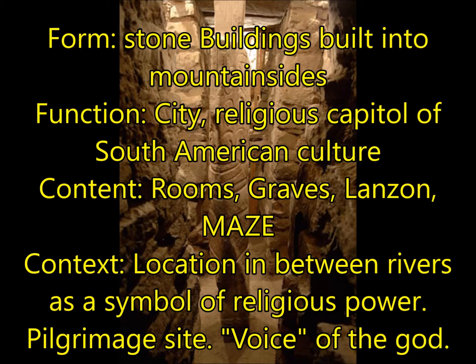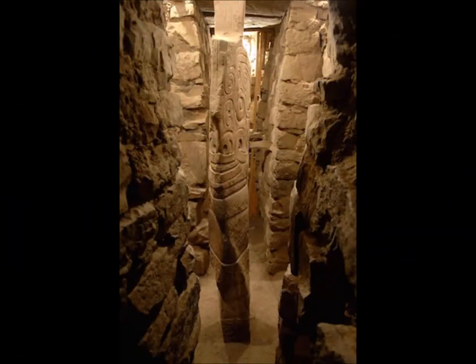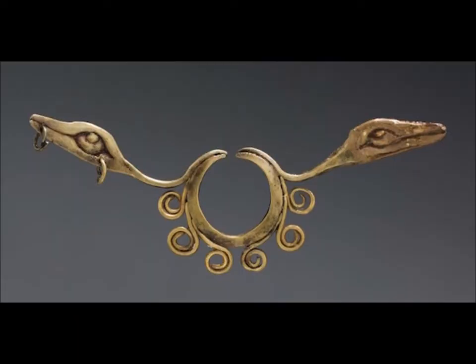For context, the location of Chavín is in between two rivers, whose joining represents a symbol of religious power. It was a pilgrimage site for people to visit and hear the voice of the god. Remember we watched the video of that conch shell being played in class? That voice is supposed to come from the god that lives inside the Lanzon. Another important thing to remember is competing realities — the human and animal factors together — where this jewelry comes in that the priest would wear. Is he human? Is he animal? It adds to that mystery of the religious function of Chavín de Huántar.